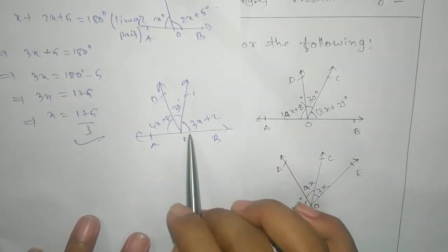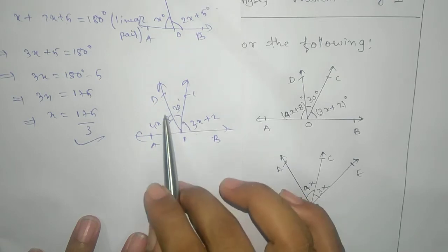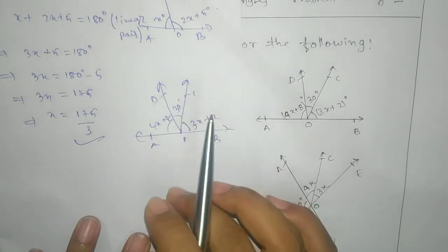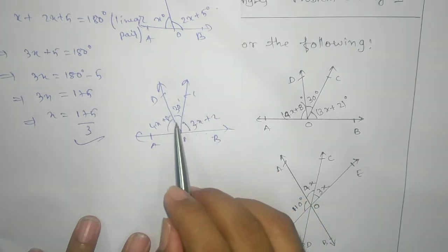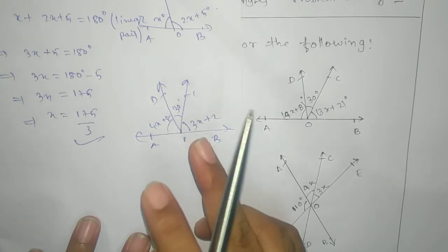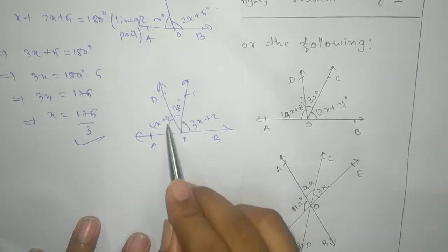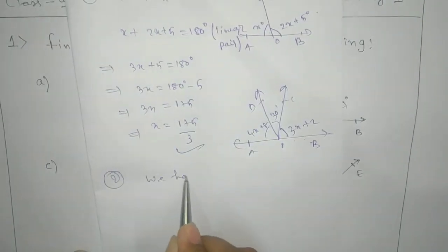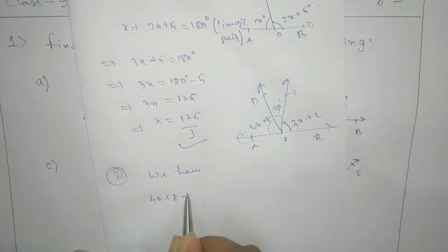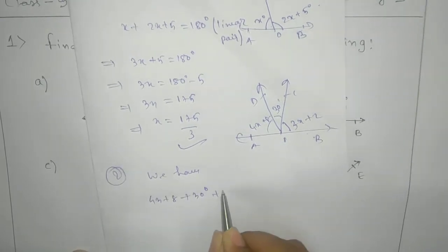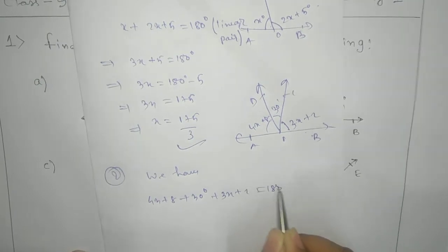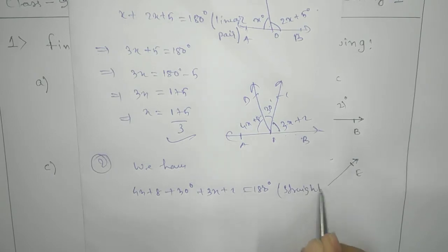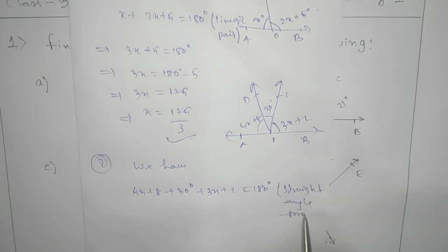But in this case you cannot write linear pair. Why? Because it is a straight line but there are more than two angles — that means a pair is not there. Linear pair means two adjacent angles. Here there are three angles, so we write: 4X plus 8 plus 30 degrees plus 3X plus 2 equals to 180, and the reason is straight angle property.